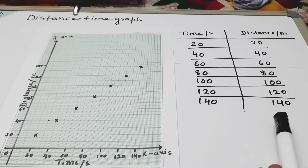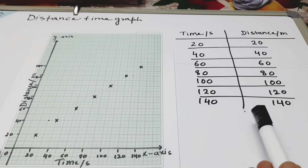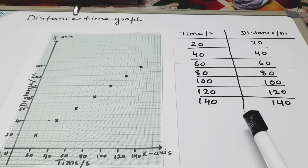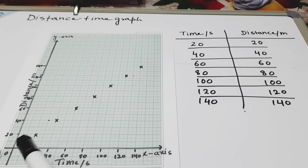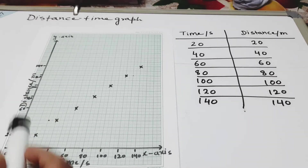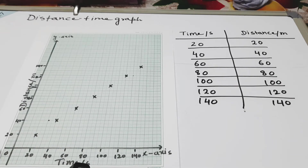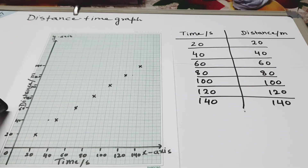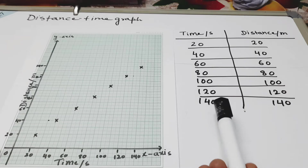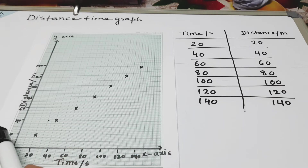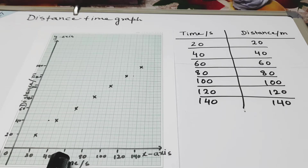This is a distance-time graph of Sam's journey. Sam covered 140 meters in 140 seconds and we have to draw a distance-time graph of his journey. We will use graph paper and draw the x and y axes. On the x-axis I am taking time in seconds, and on the y-axis distance in meters. I mark equal intervals: 20, 40, 60, 80, 100, 120, 140 on both axes.